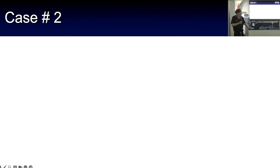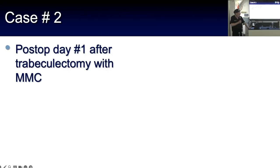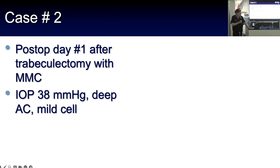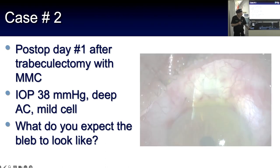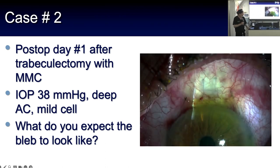Case two: one day after a trabeculectomy, the pressure is 38 mmHg with a deep anterior chamber and mild cell. You'd expect a flat bleb — and exactly right, you have a flat bleb. What do you think is going on here?